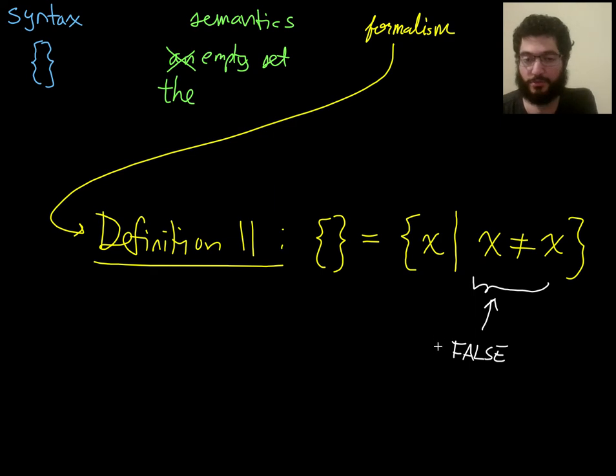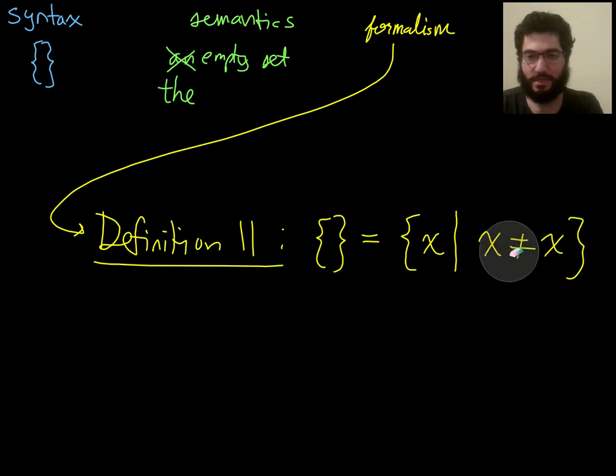So you can think of what's written here as just an arbitrarily chosen definitively false statement. If we had introduced into our language the symbol false as just standing for the ultimate false statement, the ultimate false proposition, then we could just define this as the set of x such that false. But we just have not introduced this symbol. So we can just instead put in a proposition that is definitely false.